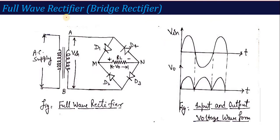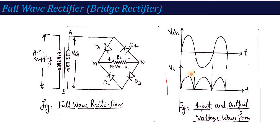The full wave rectifier includes both center tap and bridge types. The main working difference between bridge and center tap is only based on PIV. After that, the performance parameters we derive depend on the output waveform. In full wave, we get output voltage for the complete half cycle — that means we get output voltage for both the positive half and the negative half.